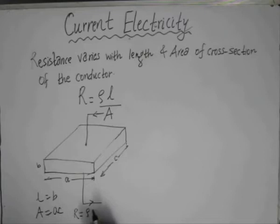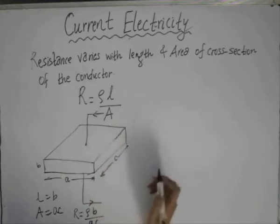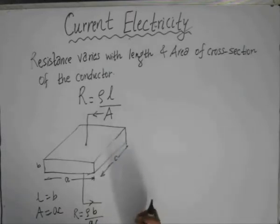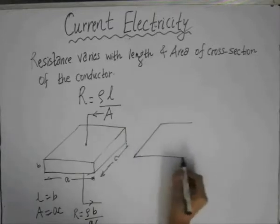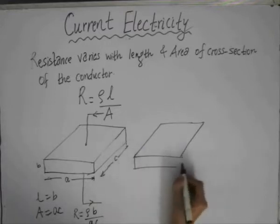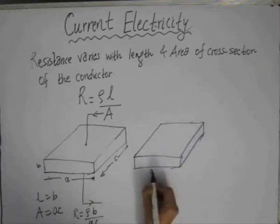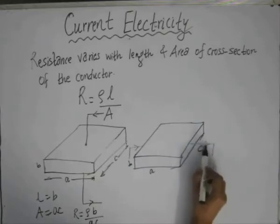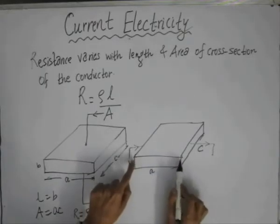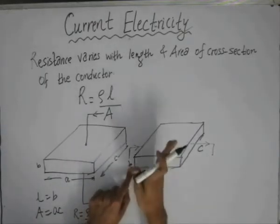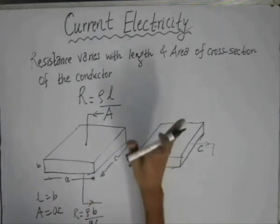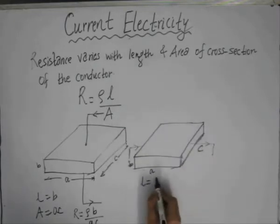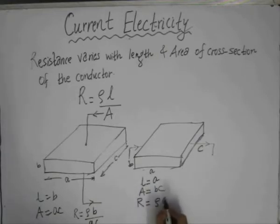So the resistance for this conductor would be ρ times length divided by area of cross section, giving R = ρB/(AC). Now consider the same block of material with the same dimensions A, B, and C, but with the potential difference applied in a different direction. In this case the length of the conductor is A and the area of cross section is B times C, so the resistance would be R = ρA/(BC).